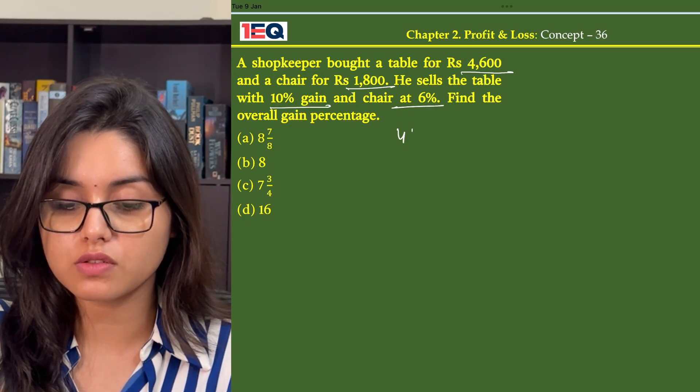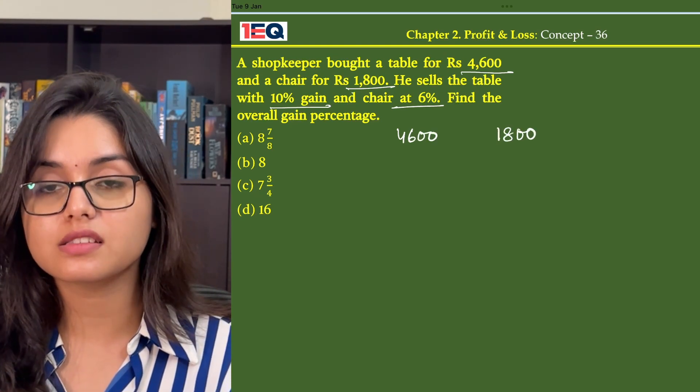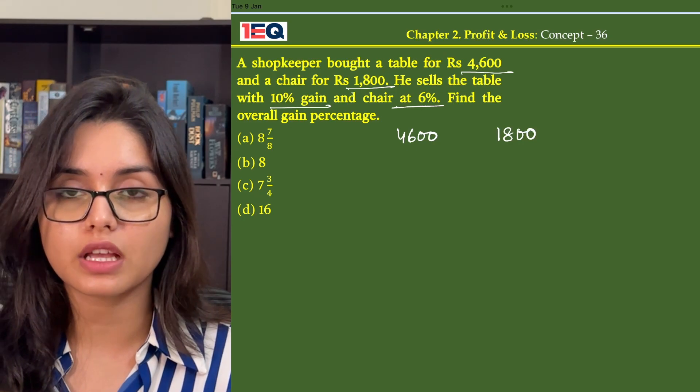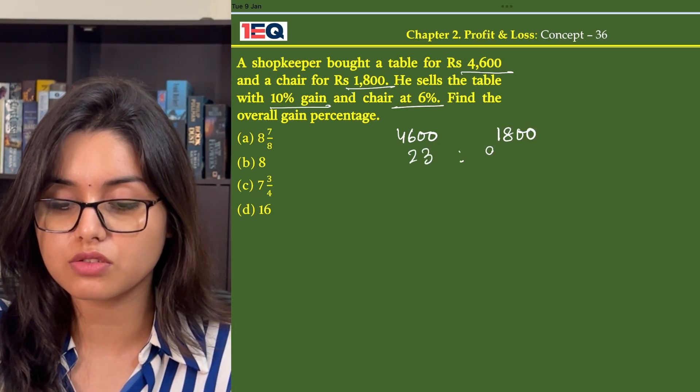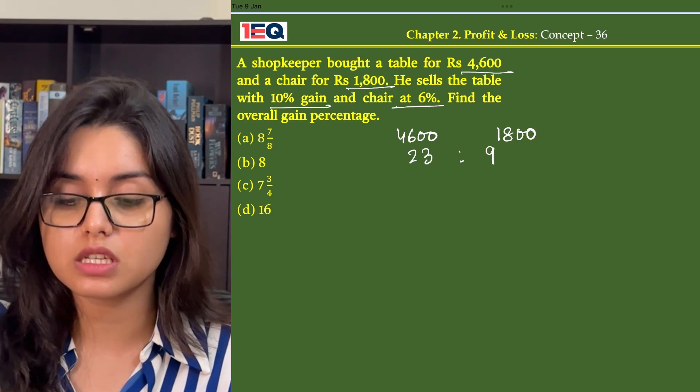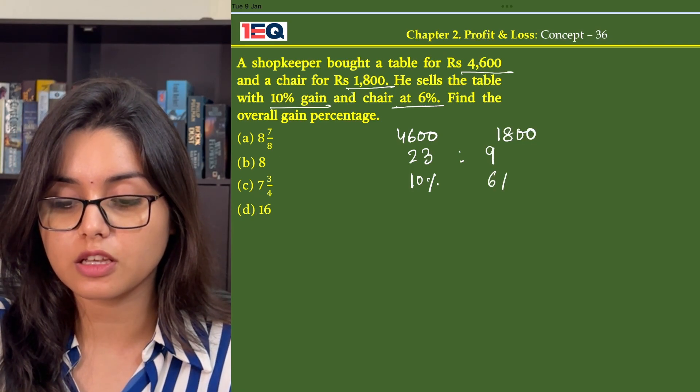So he bought the table at 4,600 and he bought the chair at 1,800. Instead of using these amounts for calculation, we can simply find their ratio, that is 23 is to 9. So he sold the table at 10% gain and he sold the chair at 6% gain.